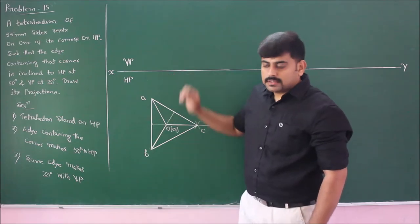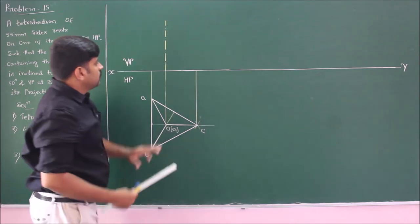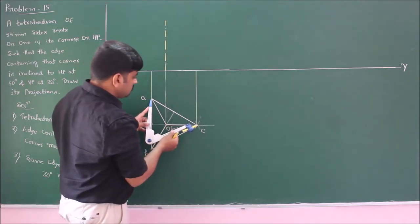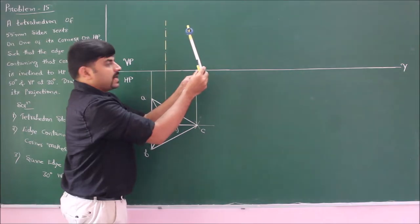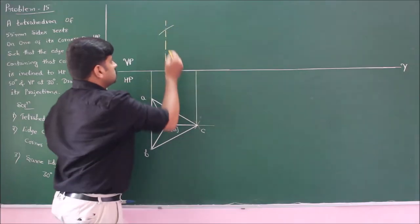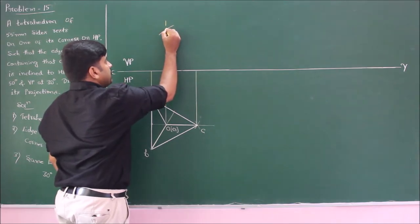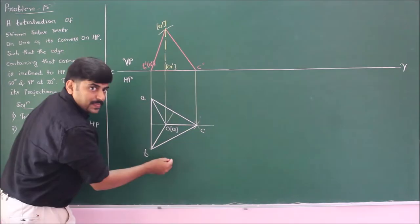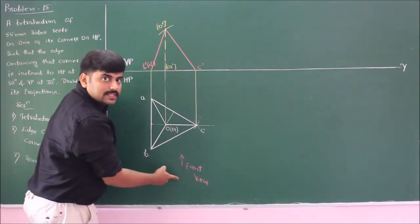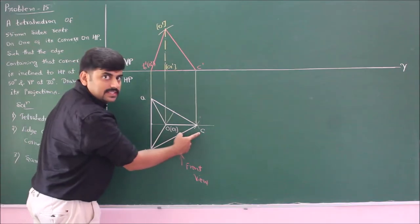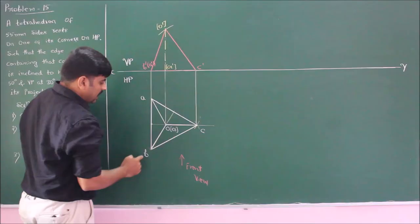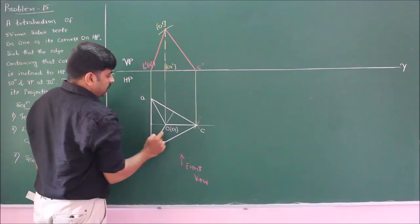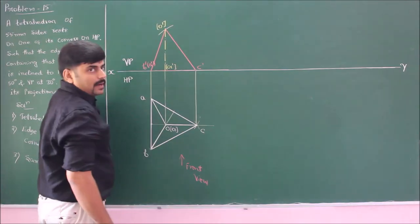Project vertically upwards and draw the axis arbitrarily. Using a compass, measure the true length of 55 mm, fixing corner C-prime to intersect the axis, giving apex O-prime. Join the apex to the corners. The observer sees corners B and C as visible; corner A is invisible. Mark B-prime, A-prime (invisible), and C-prime. The axis shows O1-prime and O-prime at the apex, completing the front view with true dimensions.